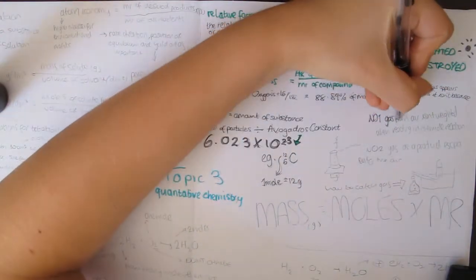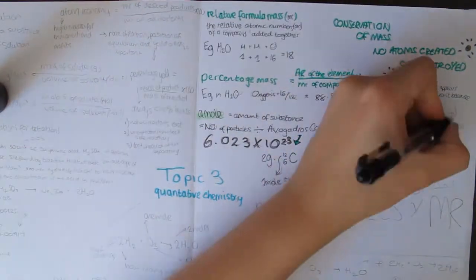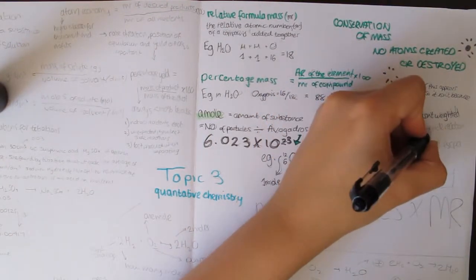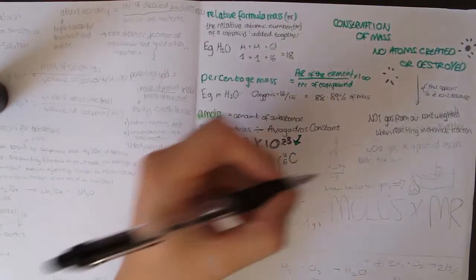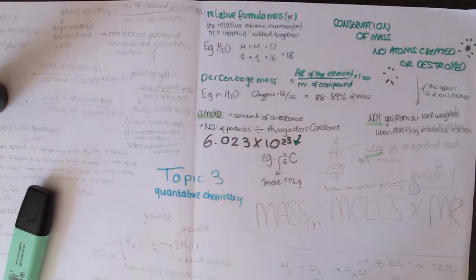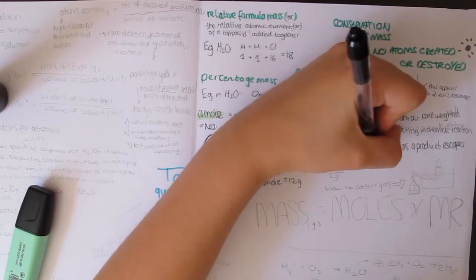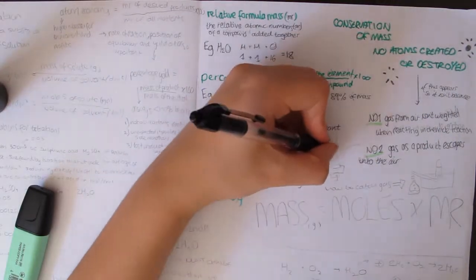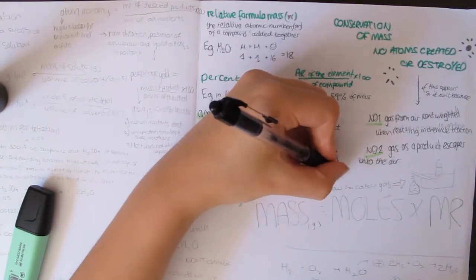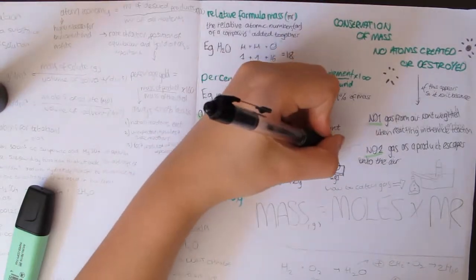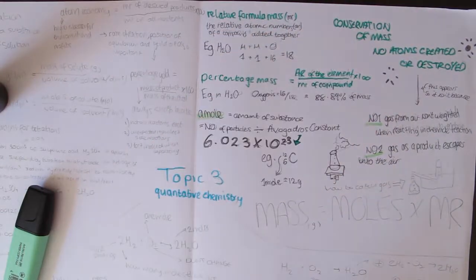Now comes perhaps the most important formula in chemistry, the golden triangle of mass, moles, and MR, because the mass in grams of any substance is equal to the number of moles that a product contains, multiplied by its MR. This comes up a surprising amount in the GCSE exams, but sometimes in much more complicated ways, as explained later.